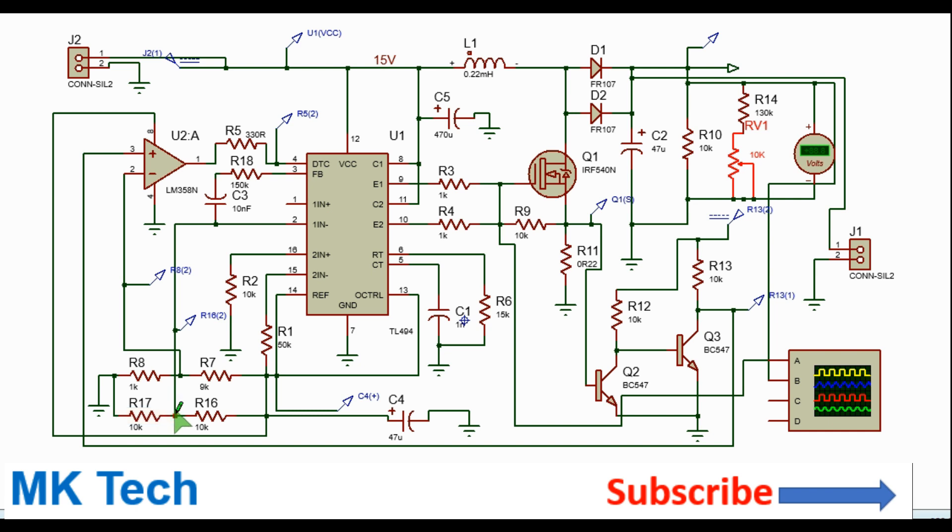So when 5 volts appears here, the output will be high. And whenever the dead time control input receives any voltage above 3 volts, the duty cycle will be reduced, or basically the dead time will be increased. So this will reduce the current draw by the MOSFET.